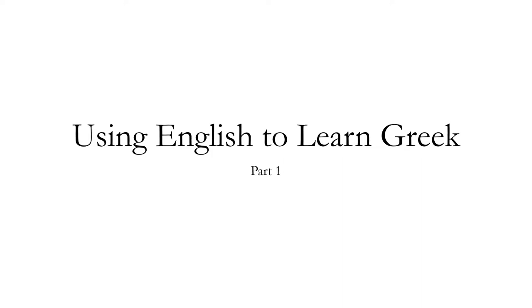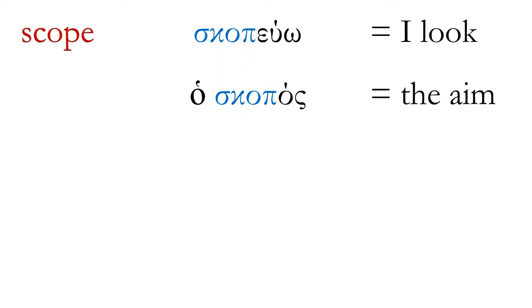We're going to use the word scope. The word scope comes from the Greek word scopevo, which means I look. It could also be I target, I aim, I aim at something. We have the word oskopos in Greek, which is the aim.